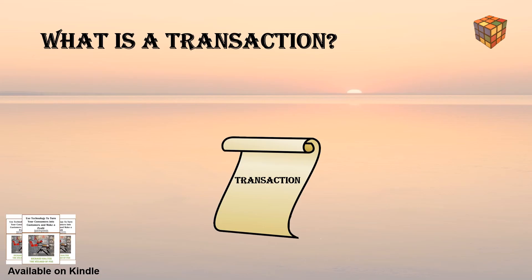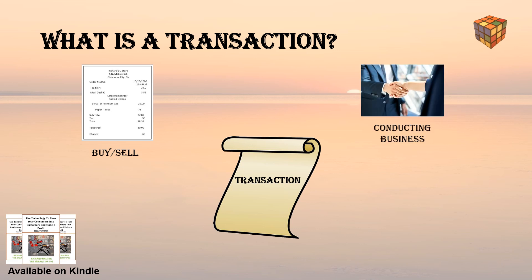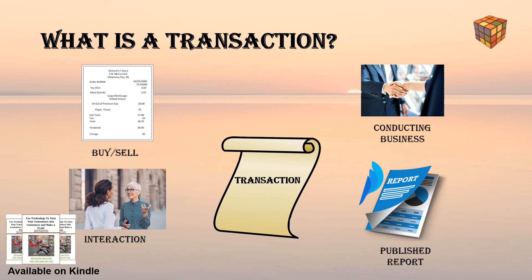So what is a transaction that can be stored on blockchain? It can be tangible — a house, a car, cash, land — or intangible, like intellectual property, such as patents, copyrights, or branding. In one case, it's an instance of buying or selling something, a business deal. It's the action of conducting business. It's a negotiation or exchange or interaction between people. It's a published report of proceedings at meetings or of learned societies. And finally, it's an input message to a computer system that must be dealt with as a single unit of work.